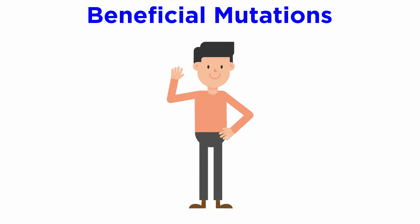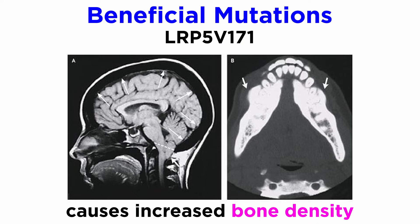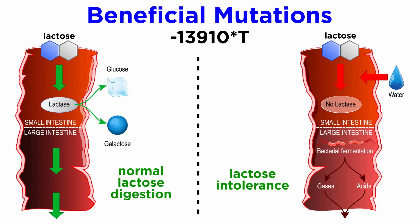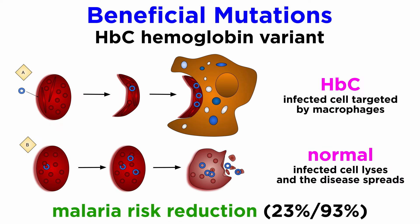Modern beneficial mutations exist in our species as well. The LRP5V171 mutation causes increased bone density, leading to stronger bones that break less frequently. The –13910*T mutation, found in many European populations, allows lactase production to continue into adulthood, meaning milk consumption can persist through the individual's entire life, rather than becoming lactose intolerant after weaning. Those with the mutation resulting in the HBC variant of the gene for hemoglobin, common in the African nation Burkina Faso, enjoy a reduction in their risk of developing malaria — 23% reduction in those with one copy, and 93% in those with two.